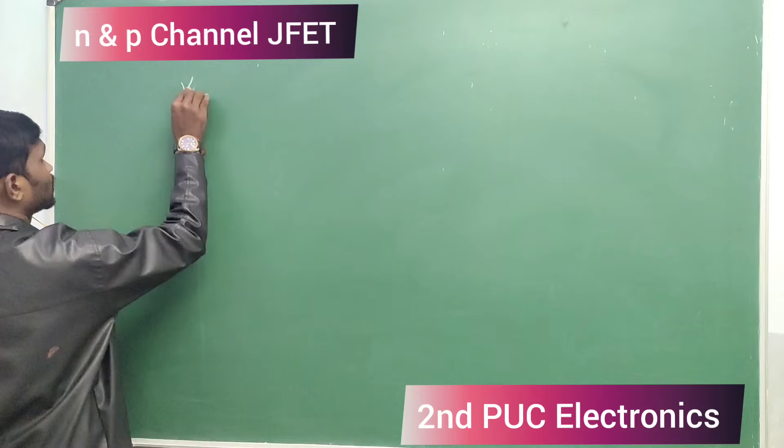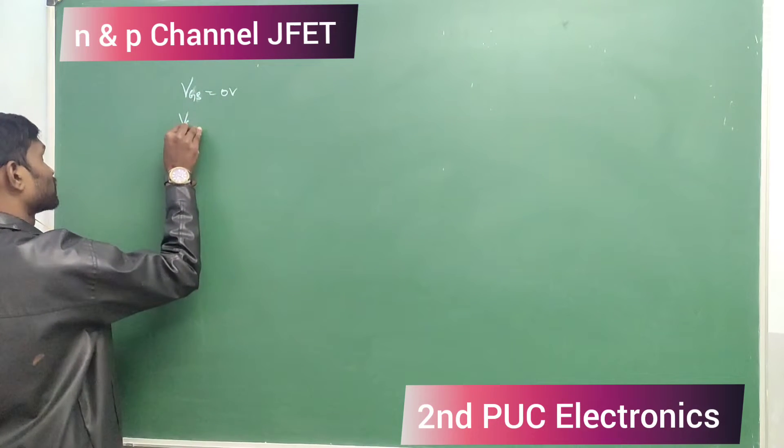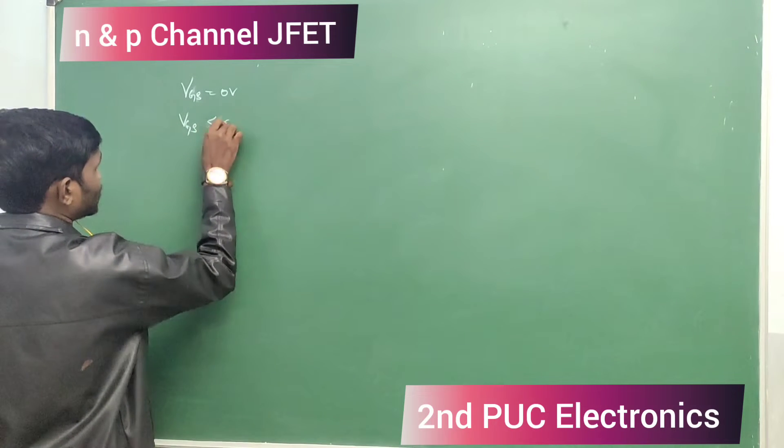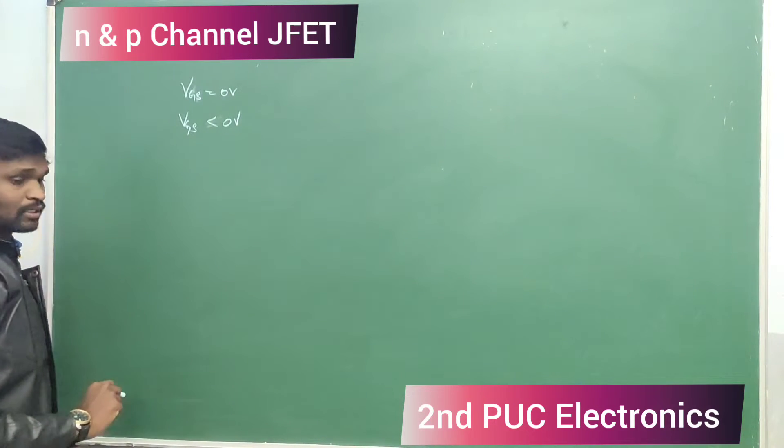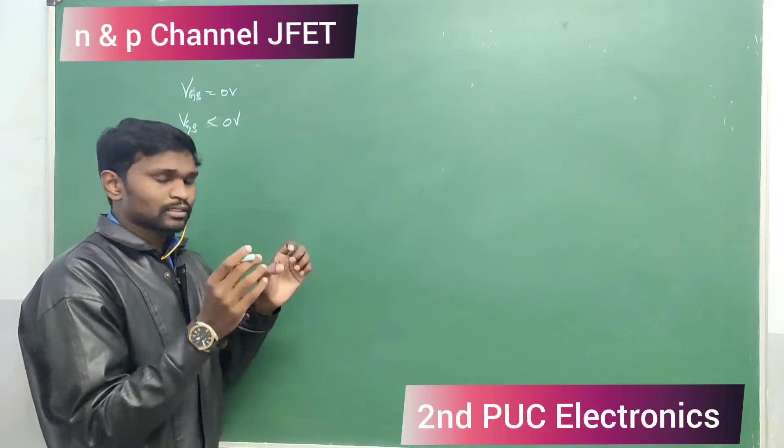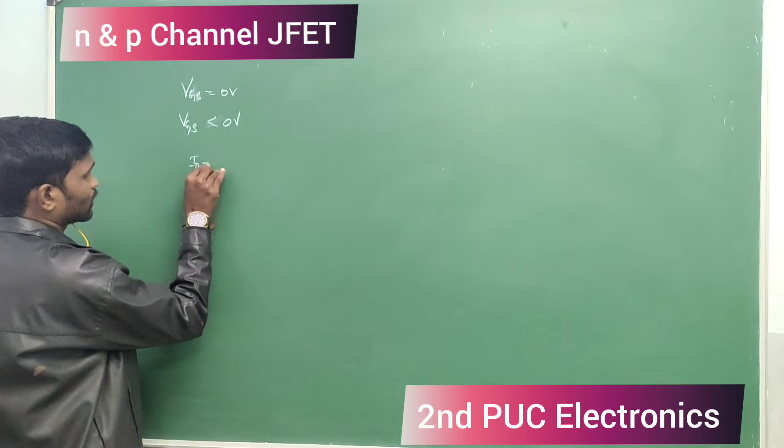When gate to source voltage is 0V, then when gate to source voltage is less than 0V. So when the depletion layers increase, they appear to meet and drain current is 0.